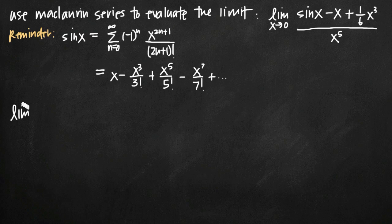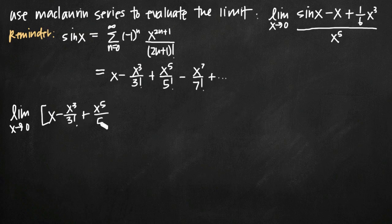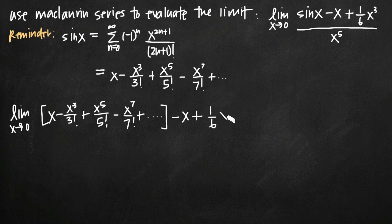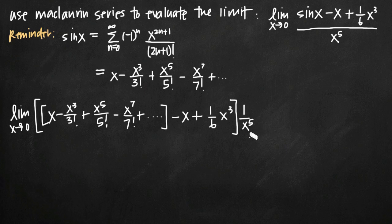So we're going to write the limit as x goes to zero. We plug in the first several terms for sine of x: x minus x cubed over 3 factorial plus x to the fifth over 5 factorial minus x to the seventh over 7 factorial plus dot dot dot. Then we have minus x plus one-sixth x to the third. This whole thing is divided by x to the fifth, which we write as multiplying by one over x to the fifth.